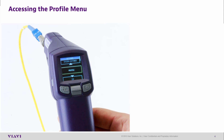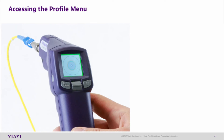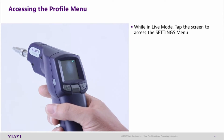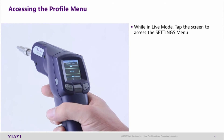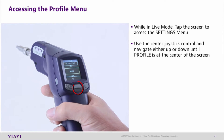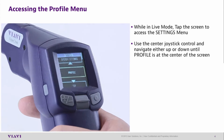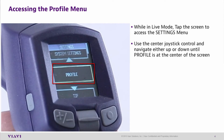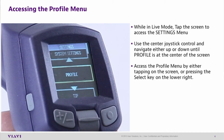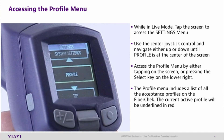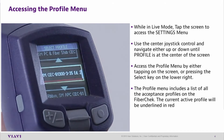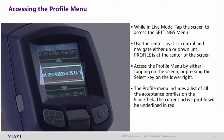Accessing the profile menu. Profiles are criteria used to evaluate connectors being tested. While in live screen mode, tap the screen to access the settings menu. Use the center joystick to navigate up or down until profile is at the center of the screen. Access the profile menu by either tapping the screen or pressing the select key in the lower right. The profile menu indicates a list of all acceptance profiles on the FiberCheck Pro. The current active profile will be underlined in red.